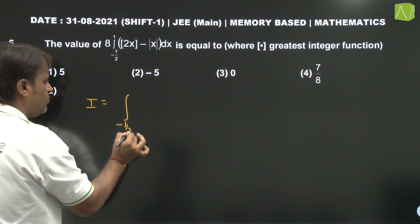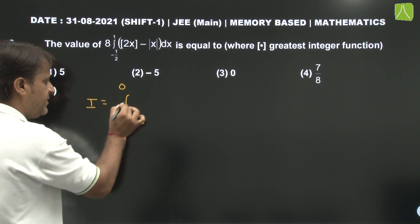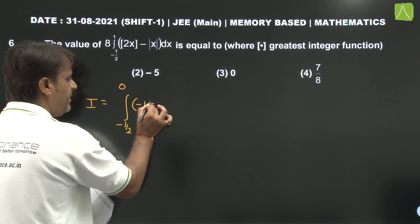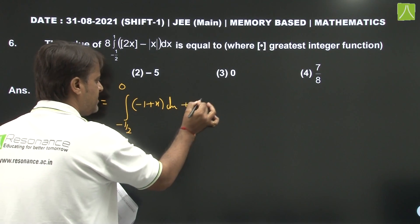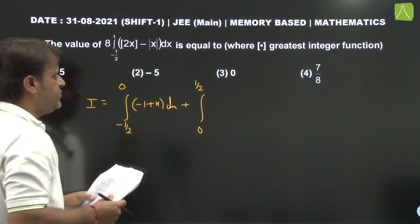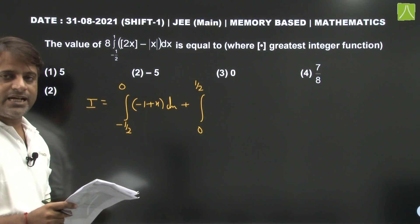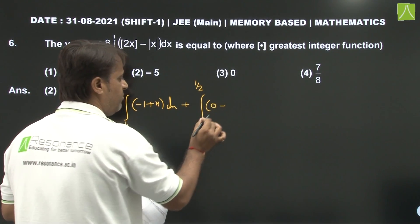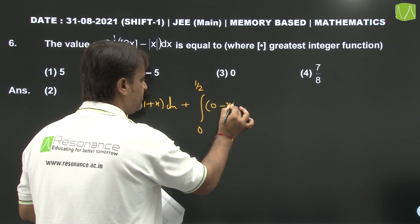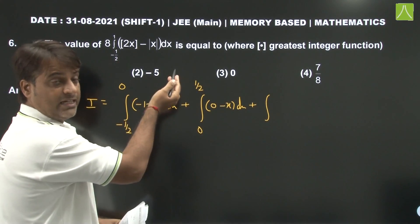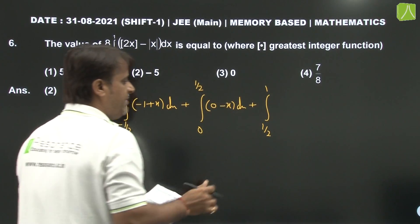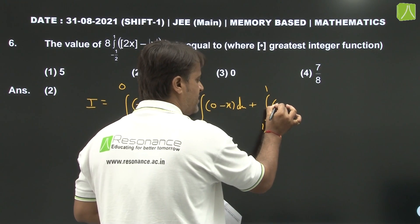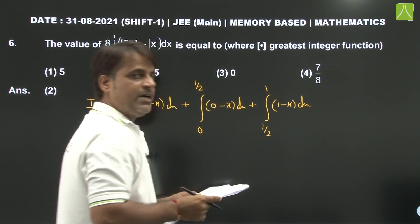I equals integration from minus 1/2 to 0: here the greatest integer gives minus 1, so with the modulus opening with negative sign, this gives plus x dx. Plus integration from 0 to 1/2: here 2x ranges from 0 to 1, so greatest integer is 0; modulus opens positive, giving dx. Plus integration from 1/2 to 1: here 2x ranges from 1 to 2, greatest integer gives 1; modulus opens positive, giving (1 minus x) dx. So the integral breaks into 3 parts.